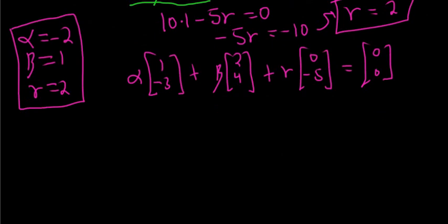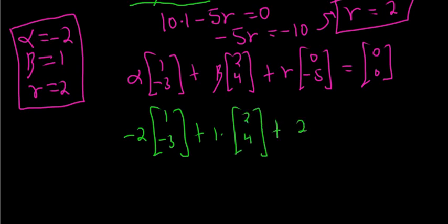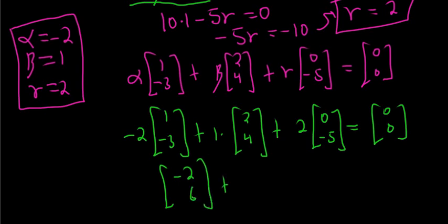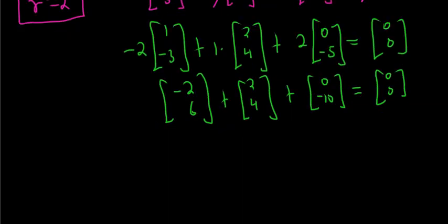So alpha was negative 2. So this becomes negative 2. So 1, negative 3. Plus 1, times 2, 4. Plus gamma was 2. And this should be a non-trivial linear combination of these vectors, which is equal to the 0 vector. Let's check. Let's finish this. So negative 2 times 1 is negative 2. And then here this gives us 6. Okay? Plus, this is 2, 4. And then plus the last one is 0, negative 10. And this should be equal to 0, 0. Okay?